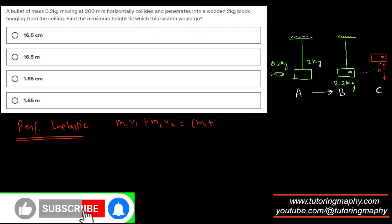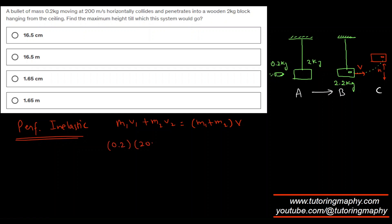What is m1? That's bullet, so 0.2 times 200. m2 is 2, but the block is at rest - it's hanging from the ceiling - so that's zero. m1 plus m2 is 2.2 and v is just v. I think this will just become 40, right? 40 is equal to 2.2v. Dividing both sides by 2.2, I am going to get 18.18 meters per second, rounded to two decimal places.